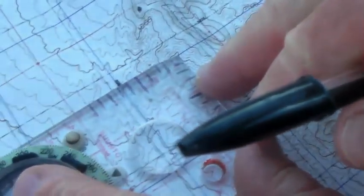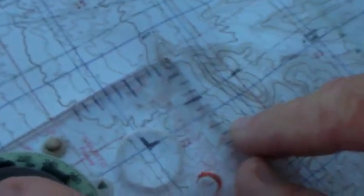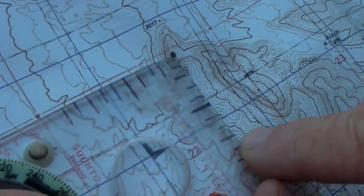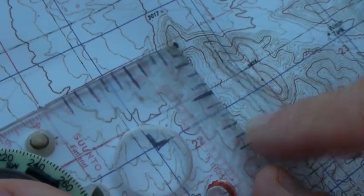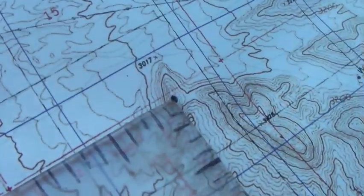So my Easting is 62. My Northing is 65. Mark out, plot out to this hilltop right there.